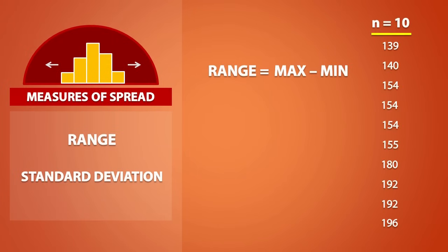In this dataset, the range is equal to the largest number, which is 196, minus the smallest number, which is 139. As a result, the range is equal to 57.